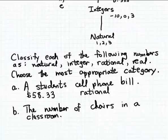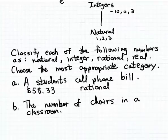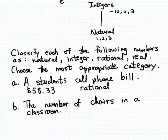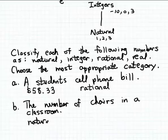The number of chairs in a classroom — how do we measure that? Well, typically we're going to count the number of chairs, so we're going to use a counting number or a positive whole number. That could be a number like one, two, or three — probably a larger number — but it's going to be a positive whole number, a counting number. So a natural number is the most appropriate for measuring the number of chairs in a classroom.